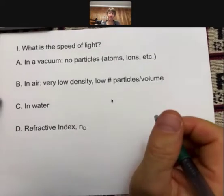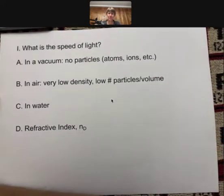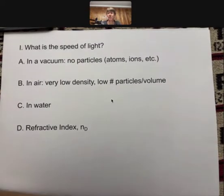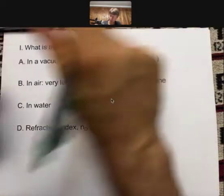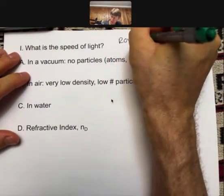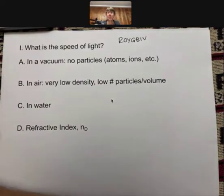Before we talk about refraction, we're going to talk about something called the speed of light. What is the speed of light? Well, it is the speed at which light travels. And you can think of Roy G. Biv, which are the colors of the rainbow: red, orange, yellow, green, blue, indigo, violet. Colors of the rainbow, that's light.